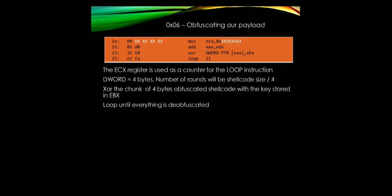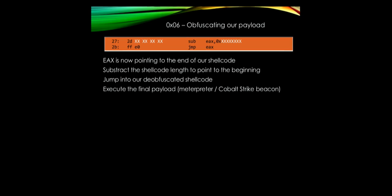The second loop is the decryption loop. It jumps by four bytes at a time because we're working with 32-bit integers, not one byte at a time. Basically the loop goes four bytes at a time to decrypt each block of encrypted data. The last step is to jump to the final payload after decryption is complete.